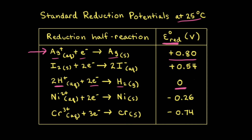The standard reduction potential for the silver half reaction is equal to positive 0.80 volts. The other half reaction involves the oxidation of solid chromium to Cr³⁺ cations. Since this is a standard reduction potential table, the half reaction is written as a reduction. The standard reduction potential for this half reaction is negative 0.74 volts.